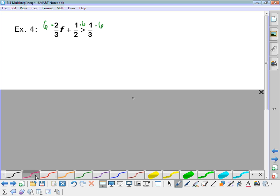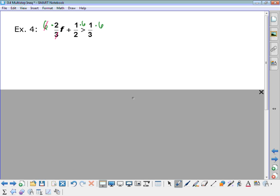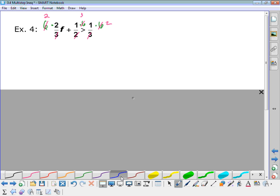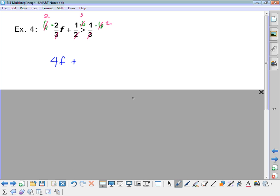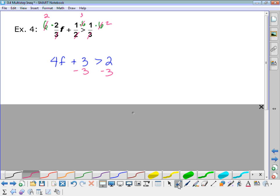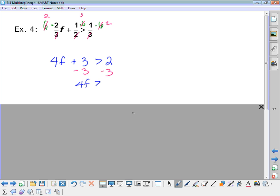All right. So if I go through and see what cancels out, 3 goes into 6 how many times? 2 times. 2 goes into 6, 3 times. And then 3 into 6, 2 times. So now if I look at what I have going across, I've got 2 times 2 times f. That's 4f. And now I've just got 3 is greater than 1 times 2, which is 2. Now I subtract the 3 from both sides. I get 4f is greater than negative 1. And my last step, divide by 4.